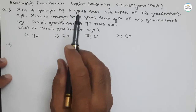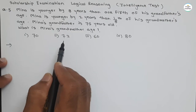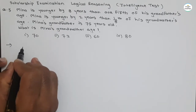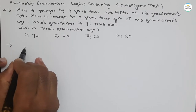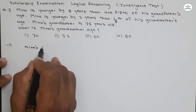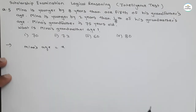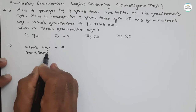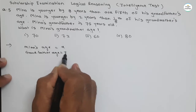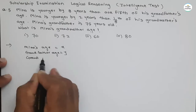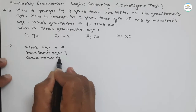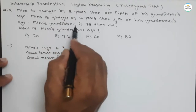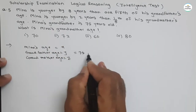To solve such types of questions we will take some assumptions and form equations. Let's assume Meena's age as X, Meena's grandfather's age as Y, and grandmother's age as Z. These are our assumptions to simplify our solution. What is given? Meena's grandfather is 75 years old, so Y equals 75 years.